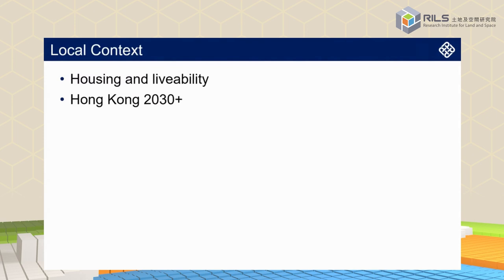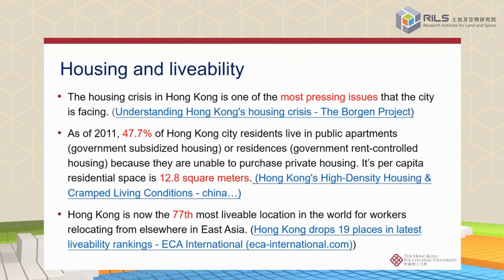Looking at housing, livability, and the Hong Kong 2030 Plus vision — I believe everyone will agree that the housing crisis in Hong Kong is one of the most pressing issues the city is facing. Looking at 2011 statistics, almost half of Hong Kong residents live in public apartments because they are unable to purchase private housing. Hong Kong's per capita residential space is less than 13 square meters, and in terms of livability, we rank 77th among city focus locations in the world.